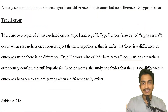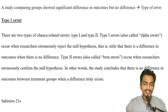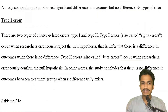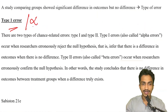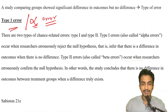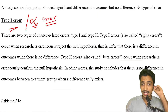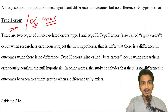Hello everybody. I'm doing this session — recorded because of time constraints — containing the discussion of the surgical group of NEET SS 2022. A study comparing groups showed significant difference in outcome but no difference, so it's a very straightforward question. If they ask, it should mostly be a type one error. I'll be covering nearly 40 odd questions in this discussion and the remaining will be covered in the next session.